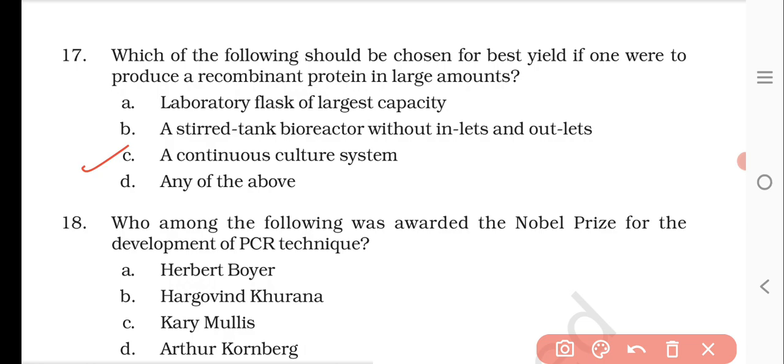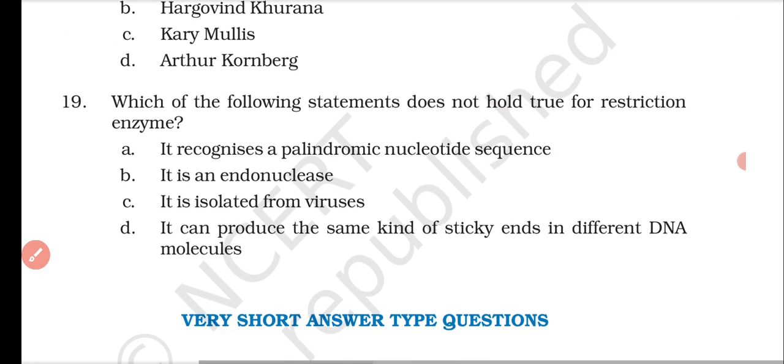Question number eighteen: who among the following was awarded the Nobel Prize for the development of the PCR technique? Options are Herbert Boyer, Har Gobind Khorana, Kary Mullis, and Arthur Kornberg. Kary Mullis won the Nobel Prize for the PCR technique.